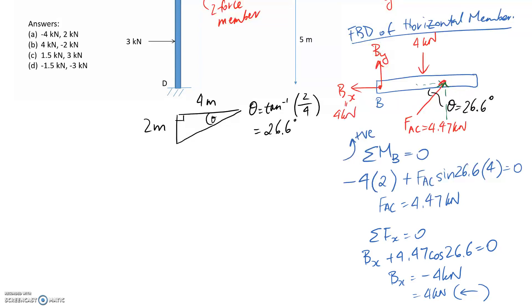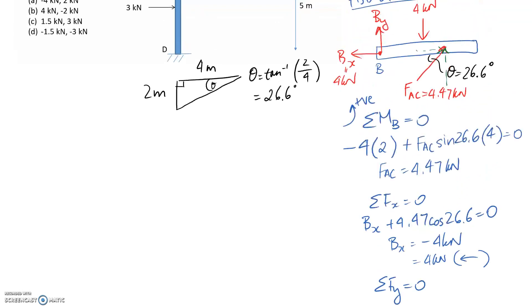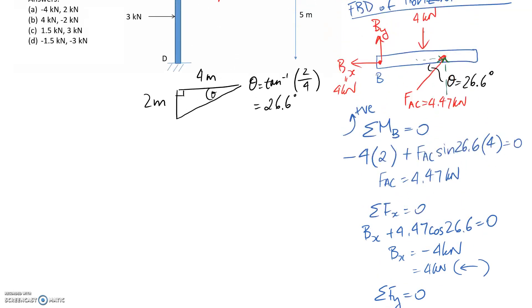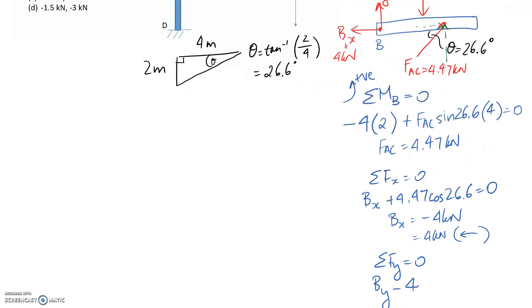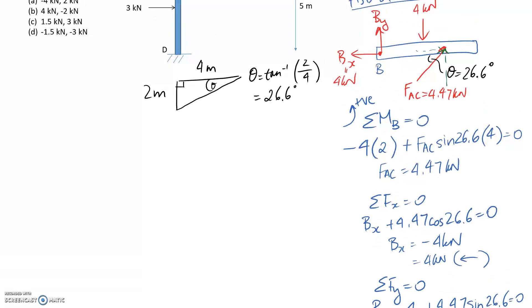Now we need By. Sum of forces in the y direction to get it. I've drawn By up, so it's positive. We've got 4 going down, so it's negative. We have part of FAC going up, so it's positive. It's the sine side of the triangle. If you solve for By, this comes out to 2 kilonewtons. It's positive, meaning the direction was correct. So it is indeed upwards.